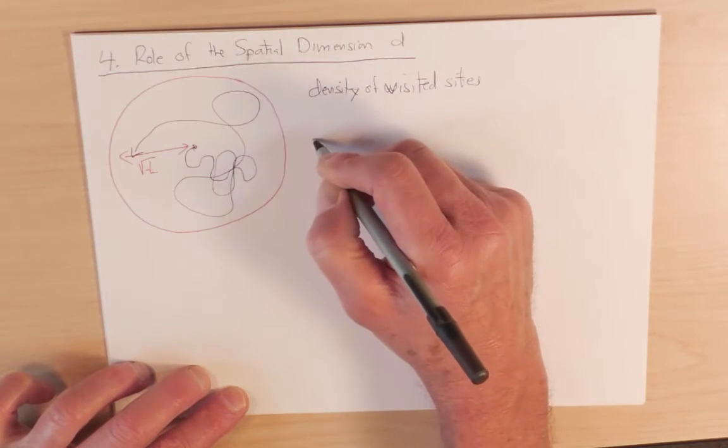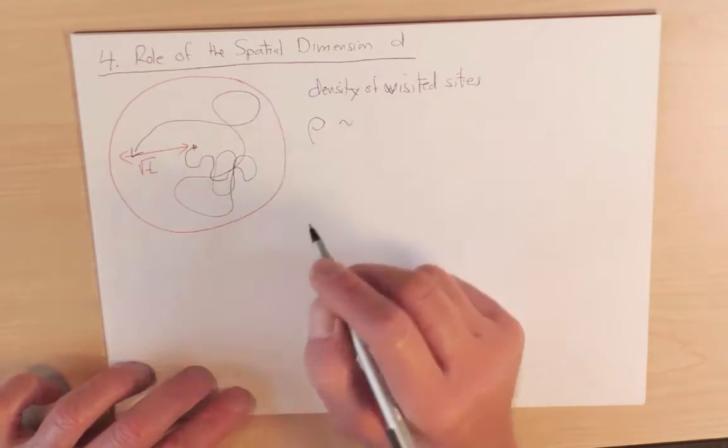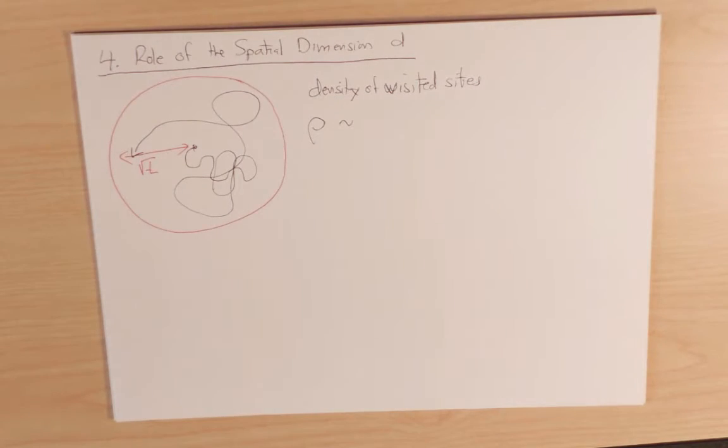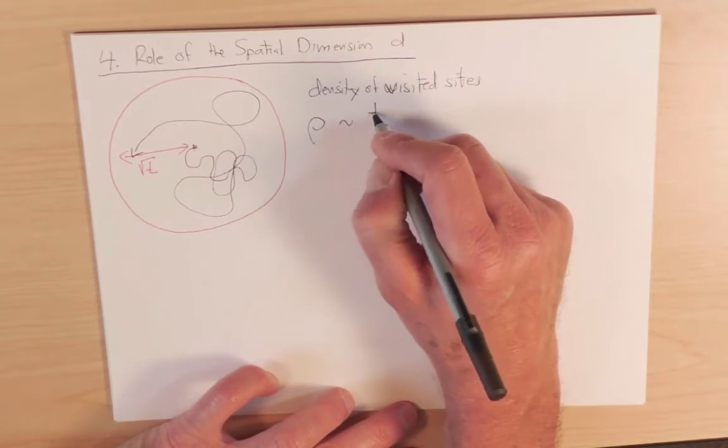So let me call that quantity rho. And so what is this density of visited sites? It's the number of visited sites divided by the volume of the exploration sphere. So in a time t, a random walker will visit t sites.